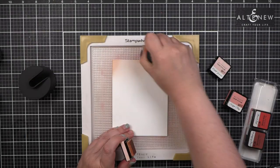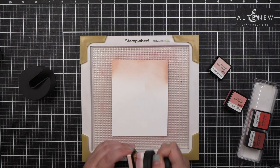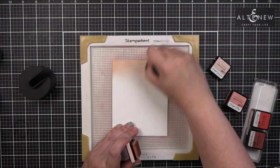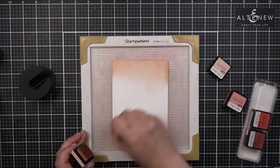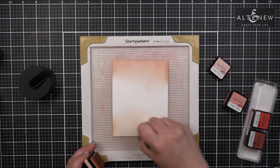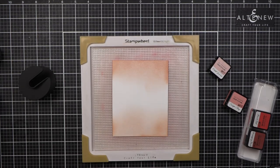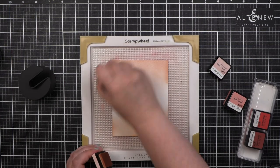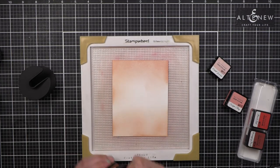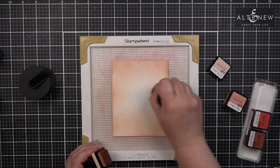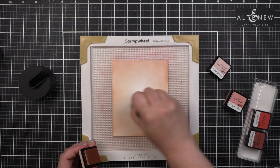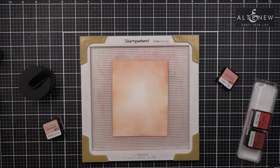For my second project, I'm inking up a panel with Pastel Sunrise, which is the lightest color from the Martian Terrain collection. I'm trying to get a look where it's darker at the top and the bottom and the middle is lighter. I'm using the large blending tool from Altenew to get a lot of coverage in a shorter period of time.